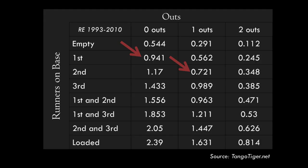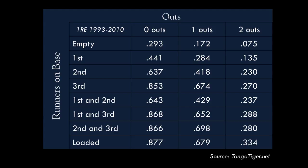One thing that run expectancy does not take into account is the inning or the score. When guys are bunting late in the game, they are not concerned with maximizing the number of runs scored — they're simply trying to score one run to tie the game or go ahead. That's where the next chart is helpful: the chance that a single run will score in the inning based on each base state. We see that while we have a 44% chance to score a run with a runner on first and nobody out, we have a 41% chance with a runner on second and one out. One change we can see is that bunting a runner from second to third base does increase the chances of scoring a run, 63% to 67%, but only if there's nobody out when the bunt is laid down.